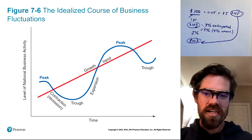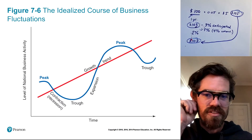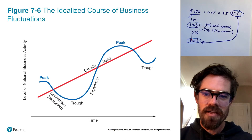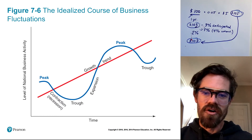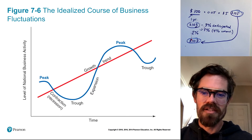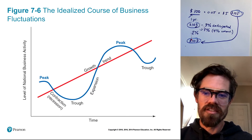Graphically, this is what business fluctuations or business cycles look like. The red line is the long-run growth trend of an economy. But in the short run, we go up above it when we have expansions and dip down below it when we have contractions. So we're fluctuating up and down above and below the long-run trend.